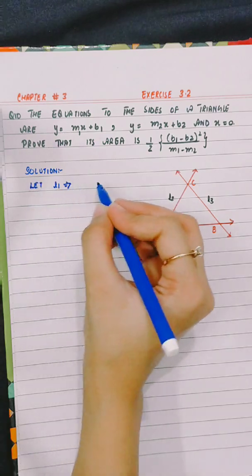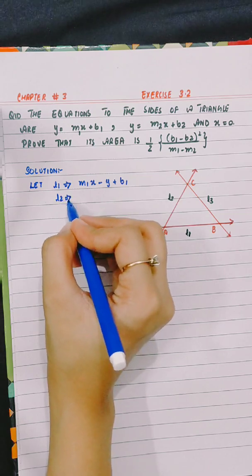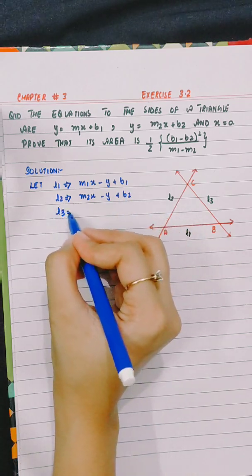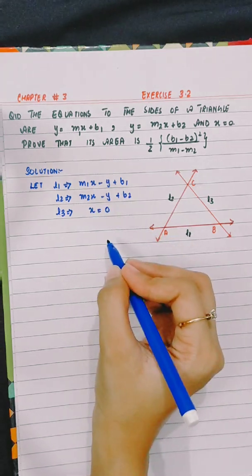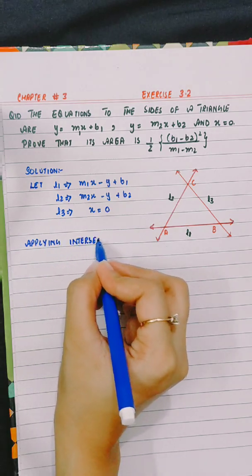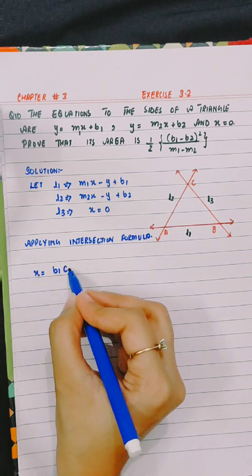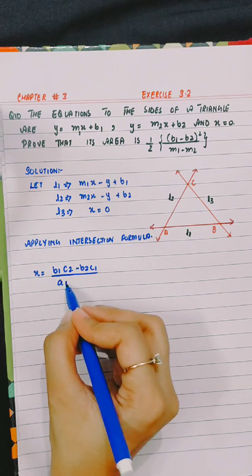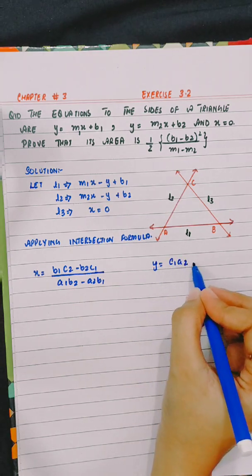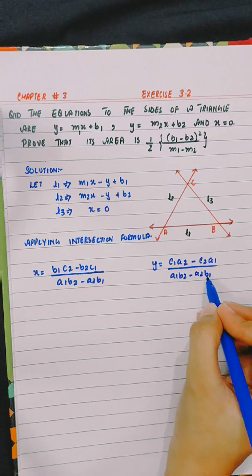Let L1 = m1x - y + b1, L2 = m2x - y + b2, and L3: x = 0. Applying the intersection formula: x = (b1*c2 - b2*c1) / (a1*b2 - a2*b1) and y = (c1*a2 - c2*a1) / (a1*b2 - a2*b1).